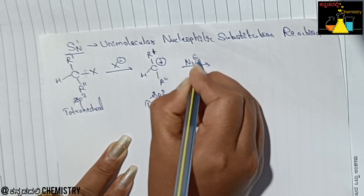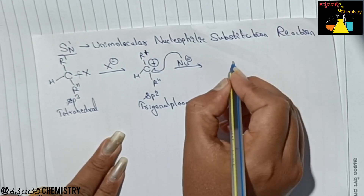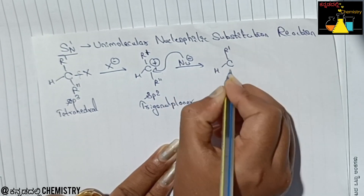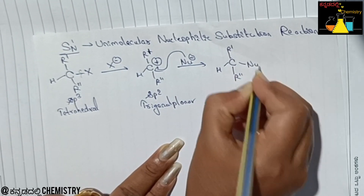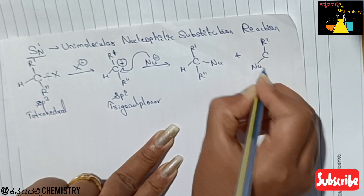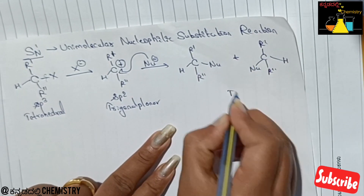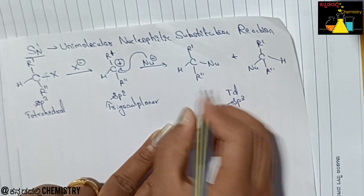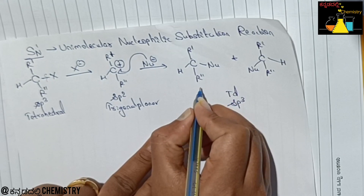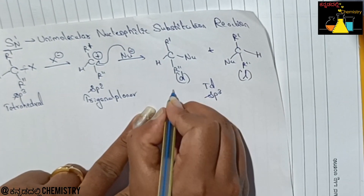Next, the nucleophile attacks the carbon bearing the positive charge. This leads to two different types of product formation: nucleophile can attack from the right side or from the left side, resulting in two products, both with sp3 tetrahedral geometry.